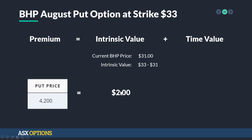And of course, if the intrinsic value takes up $2 of this put price of $4.20, then the time value needs to be the rest of that component — $2.20. Remembering that this has components of volatility and future uncertainty.